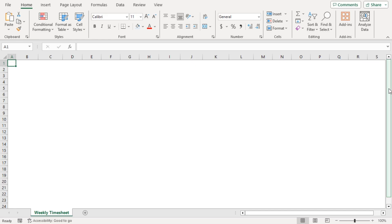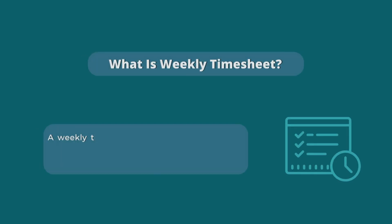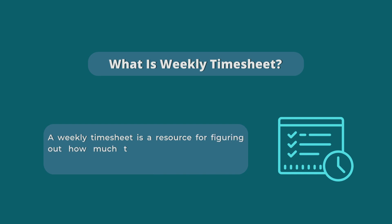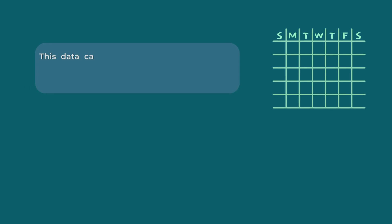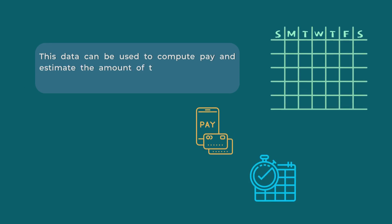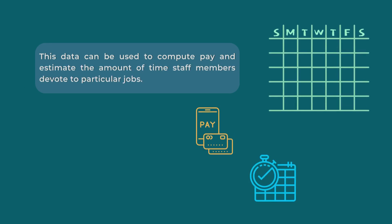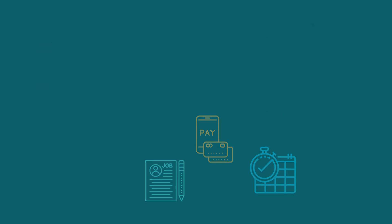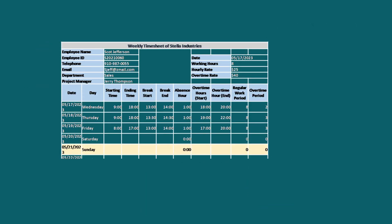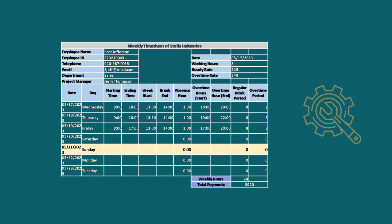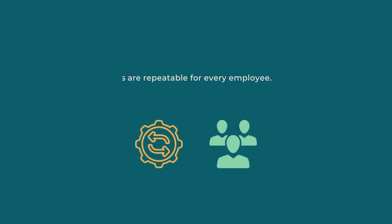For this tutorial, I'll be using Microsoft Excel 365. Before further ado, let's know what a weekly timesheet actually is. A weekly timesheet is a resource for determining how much time an employee spends working. This data can be used to compute payment and estimate the time staff members devote to particular jobs. Creating a weekly timesheet in Excel is particularly helpful because of the ability to customize it easily. Moreover, spreadsheets are repeatable for every employee.